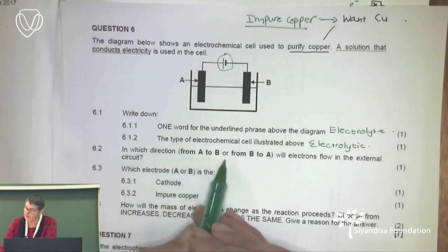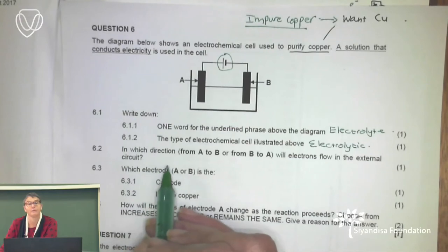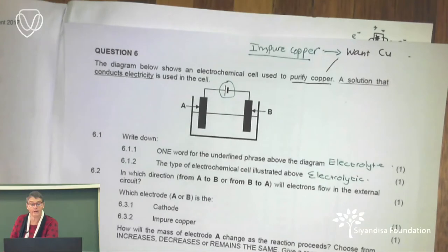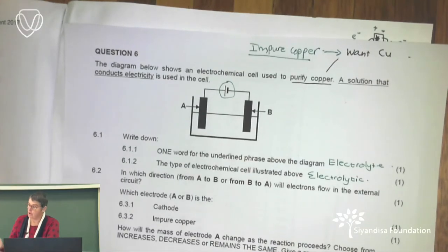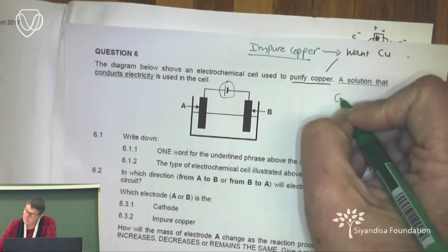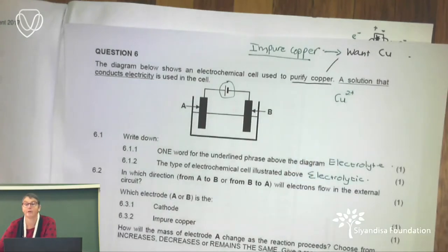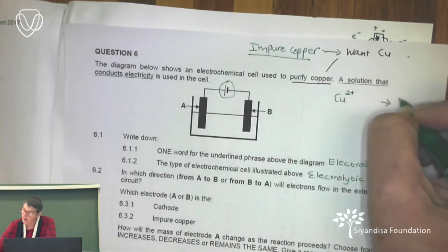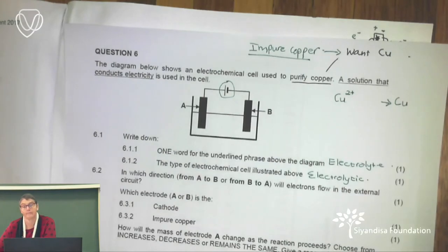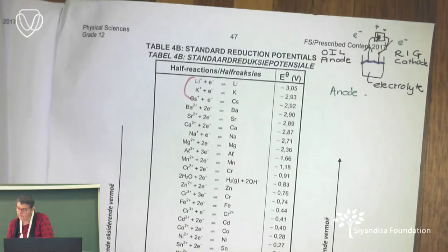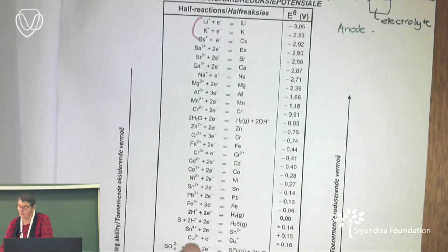Which electrode A or B is the cathode? Copper becoming Cu²⁺ is oxidation — loss of electrons — so that electrode is the anode. That means A is the anode and B is the cathode. Which electrode is the impure copper? Since we want impure copper to form ions first, the impure copper is A. So electrode B is the cathode.